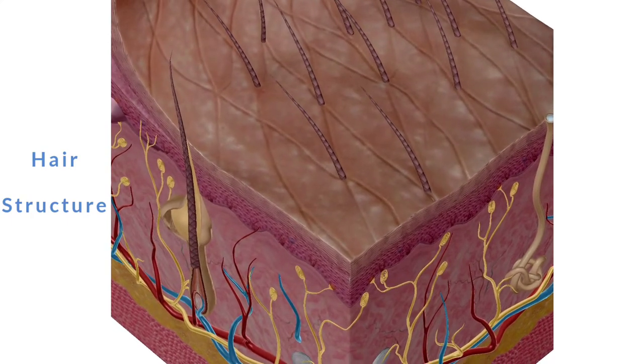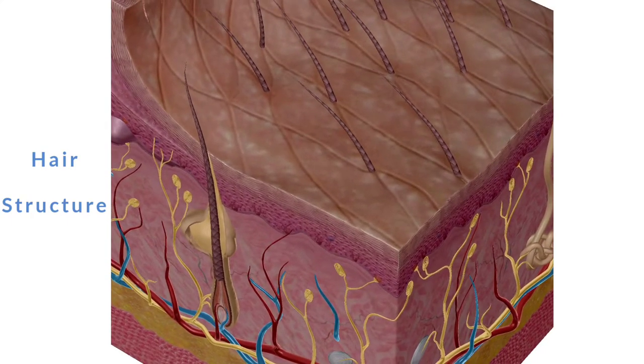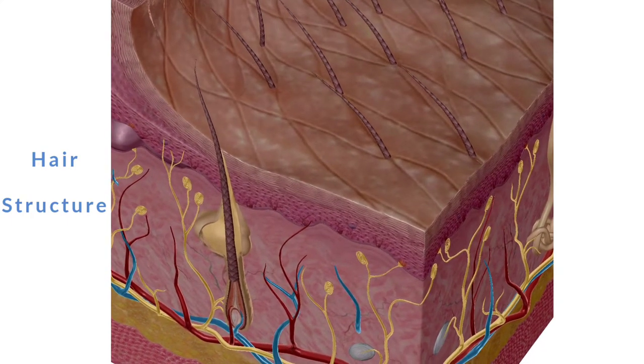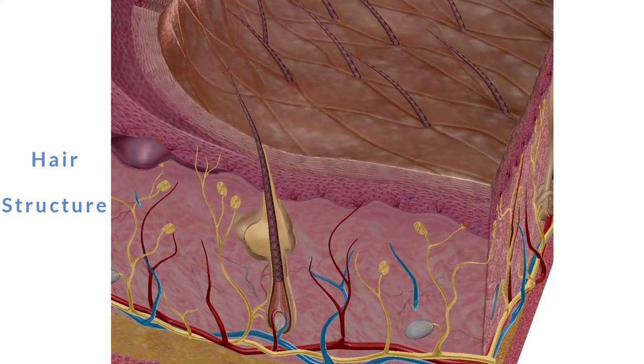Smooth muscles called the erector pili are attached to the hair and can contract to pull the hair upward, producing goosebumps.